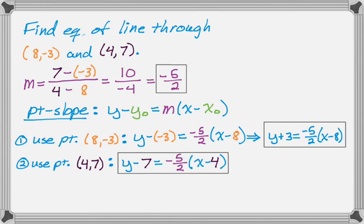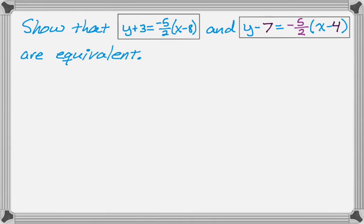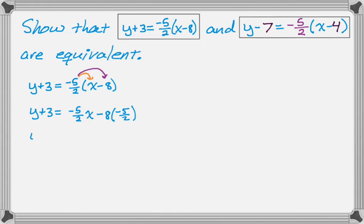So we have two different forms of a line, but how do we really know that they're the same? Well, it turns out that we can show they're equivalent. So I'm going to do that for you. So I'm going to start with the first line. And I'm just going to simplify this. So what I'm actually going to do is solve for y. So y + 3 equals, I'm going to distribute -5/2. So first it goes to x. So that's -5/2 times x, which is just -5/2 x. And then it goes to -8. So I'm going to write minus 8 times the quantity -5/2.